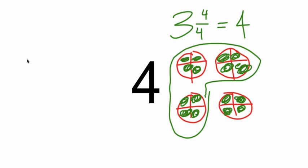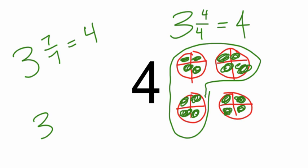So another name for four could be three and seven-sevenths, because we have three and the fraction seven-sevenths, which is worth one, so this would equal four as well. I could say three and ten-tenths, because we have three wholes and a whole fraction, which would be four.